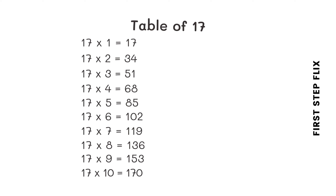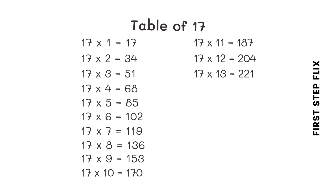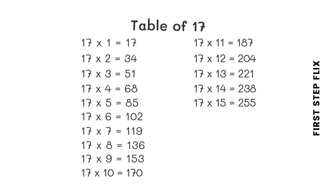17 tens are 170. 17 elevens are 187. 17 twelves are 204. 17 thirteens are 221. 17 fourteens are 238. 17 fifteens are 255.